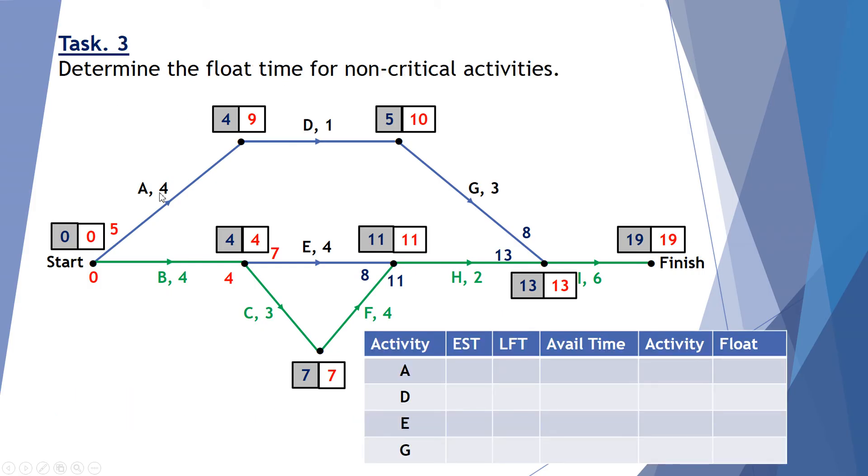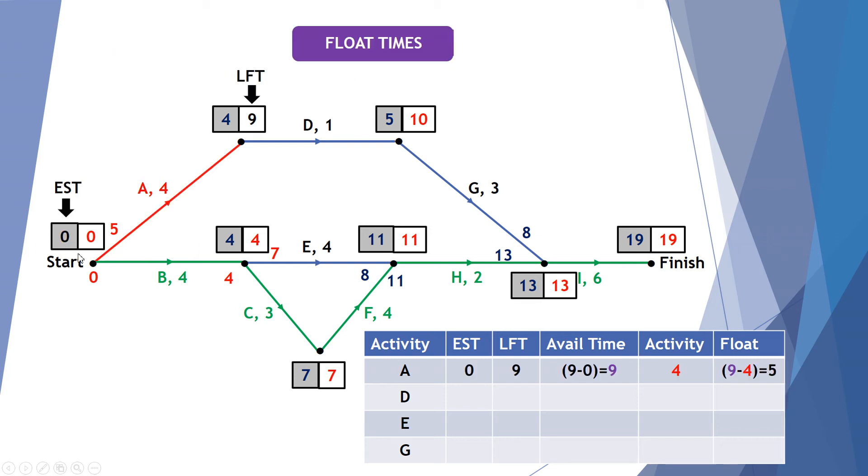Let's now determine the float times for the non-critical activities. So A here, these are the ones that are not on the critical path. So A has an earliest starting time of 0 and a latest finishing time of 9. So that means we've got 0 to 9, 9 weeks available. Activity A takes 4. So if I take 4 away from 9, that gives me 5. 5 float weeks or 5 lag weeks. It means somewhere in here we could stop for 5 weeks and still get it completed by the latest finishing time.